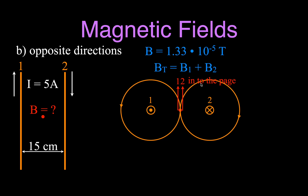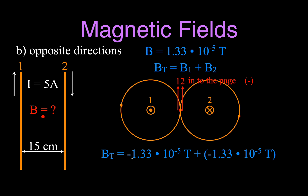Both fields are pointing in the same direction — both negative (into the page). To find the total magnetic field, we add B₁ plus B₂: negative 1.33 × 10⁻⁵ T plus negative 1.33 × 10⁻⁵ T equals negative 2.66 × 10⁻⁵ T. The minus sign does not mean the field is less than zero — it simply indicates direction (into the page). The magnitude is 2.66 × 10⁻⁵ Teslas and the direction is into the page.